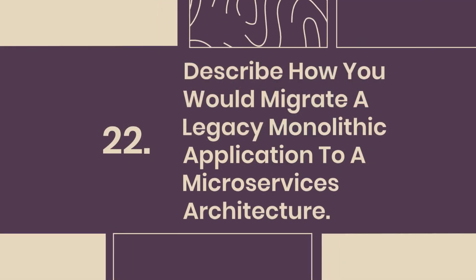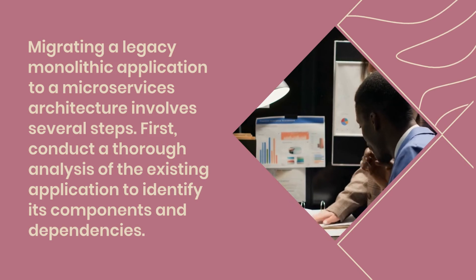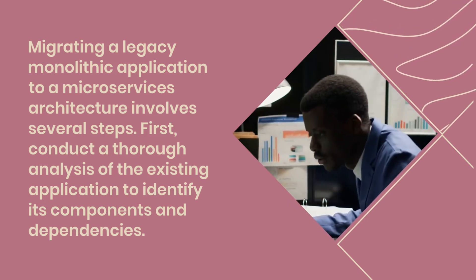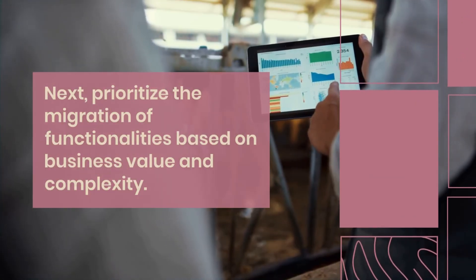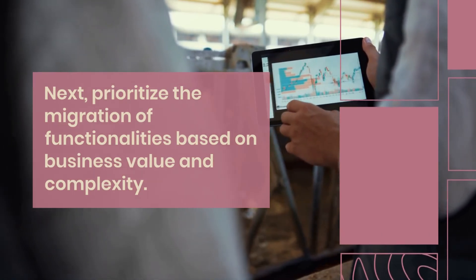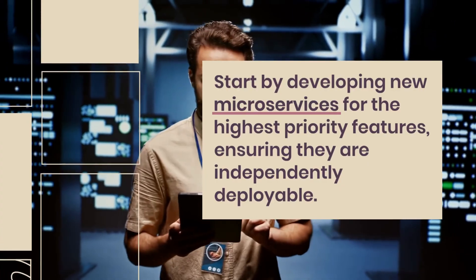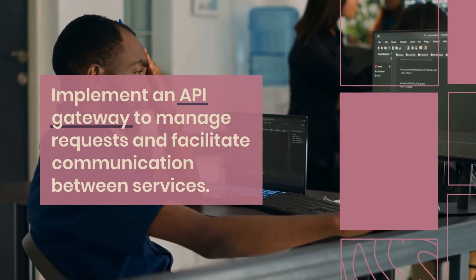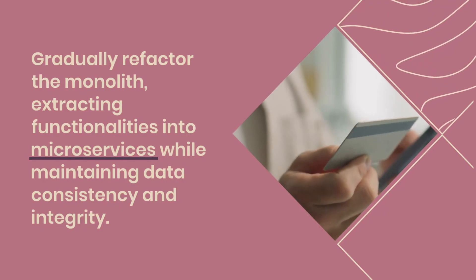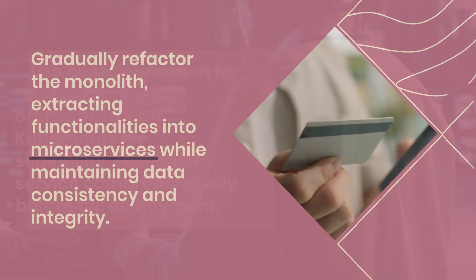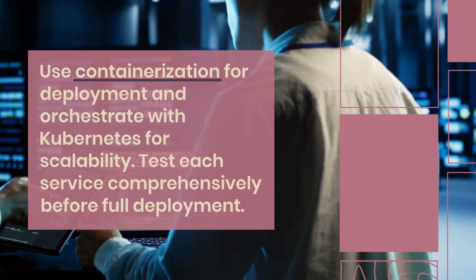Question 22: Describe how you would migrate a legacy monolithic application to a microservices architecture. Migrating a legacy monolithic application to a microservices architecture involves several steps. First, conduct a thorough analysis of the existing application to identify its components and dependencies. Next, prioritize the migration of functionalities based on business value and complexity. Start by developing new microservices for the highest-priority features, ensuring they are independently deployable. Implement an API gateway to manage requests and facilitate communication between services. Gradually refactor the monolith, extracting functionalities into microservices while maintaining data consistency and integrity. Use containerization for deployment and orchestrate with Kubernetes for scalability. Test each service comprehensively before full deployment.